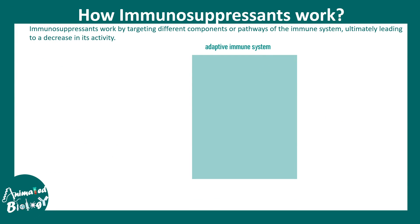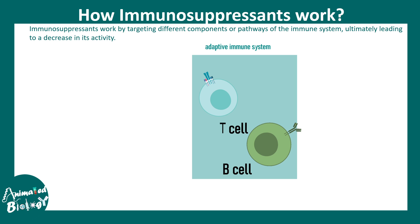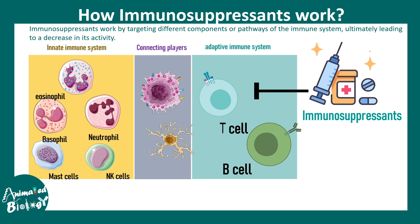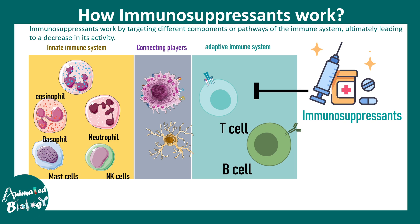Our immune system has different components such as the adaptive immune system comprising of T and B cells, the innate immune system, and the connecting players between the two immune systems are dendritic cells and macrophages. Immunosuppressants mostly act by inhibiting aspects of T and B cell activation and development.